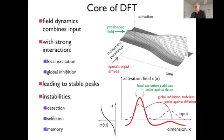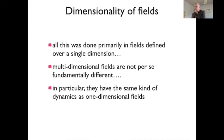All of these instabilities that support these compositions come from the interaction within the field. So when you vary the dimension of a field you just have to think about what the meaning of this interaction would be in high dimensional spaces.